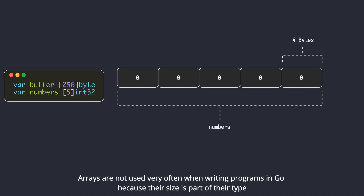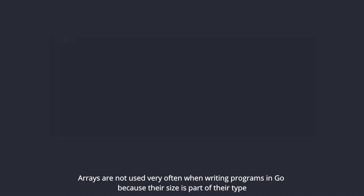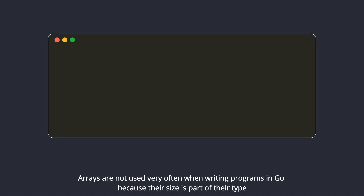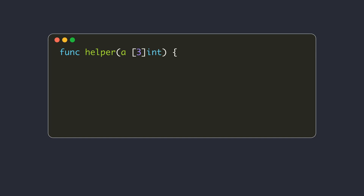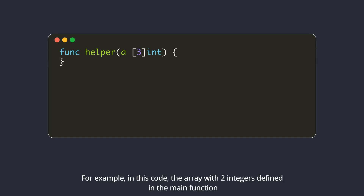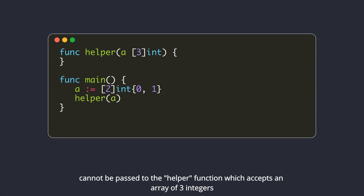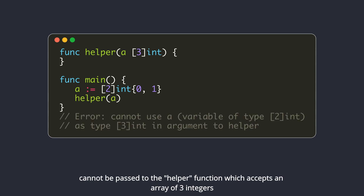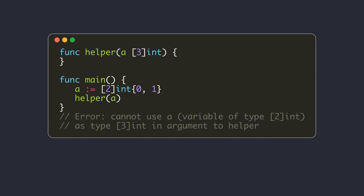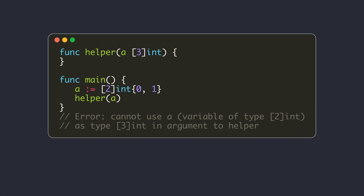Arrays are not used very often when writing programs in Go because their size is part of their type. For example, an array with two integers defined in the main function cannot be passed to a helper function which accepts an array of three integers — they are different types. Also, arrays are not growable; you cannot append more elements to an existing array.